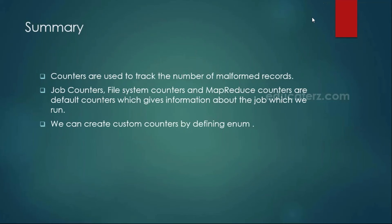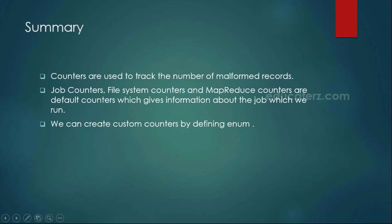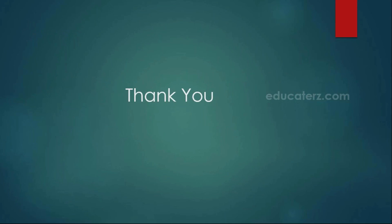In summary, we discussed how counters are used by developers to track the number of malformed records — also called data profiling — to identify bad records in your input file. By default we have job counters, file system counters, and MapReduce framework counters. We defined our own custom counters using enum, providing a group name and sub-items, and incremented the counter using context.getCounter().increment(). Thank you — see you in the next module.